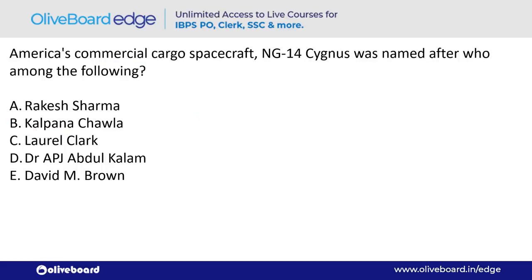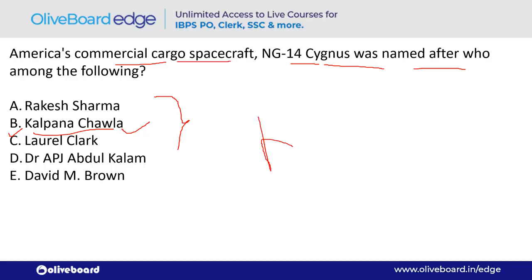America's commercial cargo spacecraft NG-14 Cygnus was named after which person? It was named after Kalpana Chawla — option B. She is the first Indian woman to go to space and worked at NASA in America.